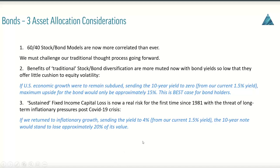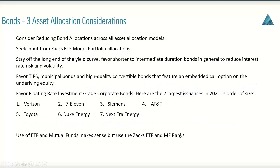If we return to an inflationary growth environment and that sends the 10-year treasury to 4%, having purchased when it was yielding 1.5%, that 10-year note would literally stand to lose about 20% of its value. We've got a real risk now of sustained fixed income capital loss for the first time since 1981 — but this would only occur if inflation were to actually embed itself long-term, which is still uncertain.